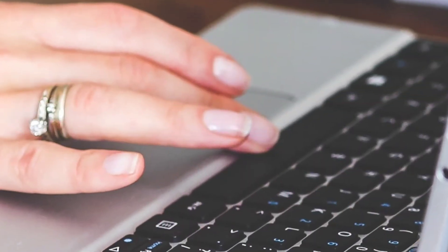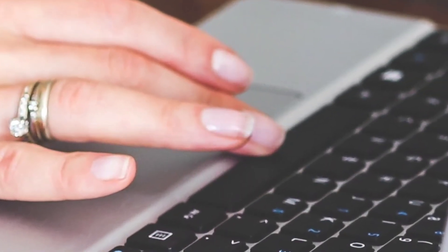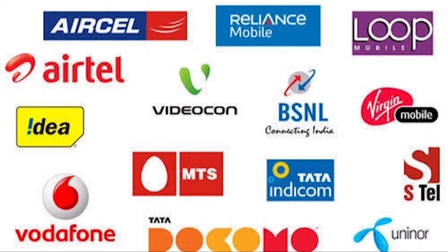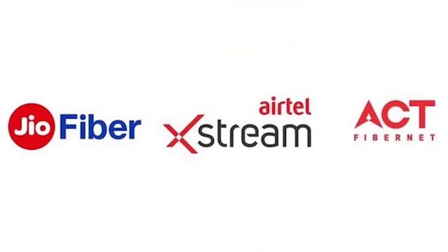For instance, to access the internet for our gadgets, we either use the mobile data provided by our SIM such as IDEA, ATL, Jio, etc., or by the broadband networks like ATFibernet, JioFibernet, etc. So the one which you are subscribed to is known as your ISP.